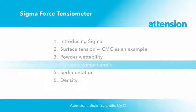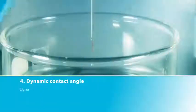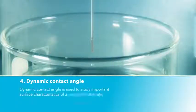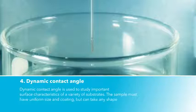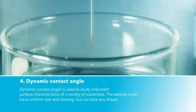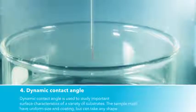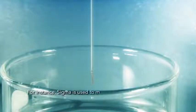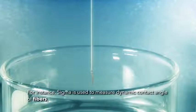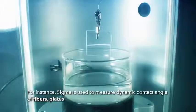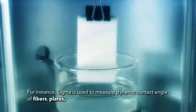Next, we will measure a dynamic contact angle. Dynamic contact angle is used to study important surface characteristics of a variety of substrates. The sample must have uniform size and surface properties, but can take any shape. For instance, sigma is used to measure dynamic contact angle of fibers, plates, polymer blocks, and so on.